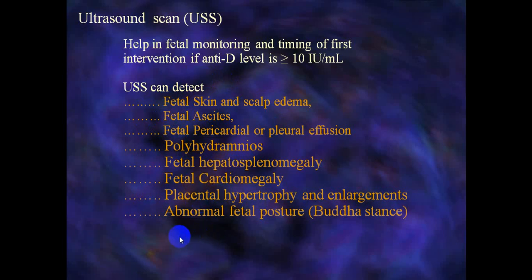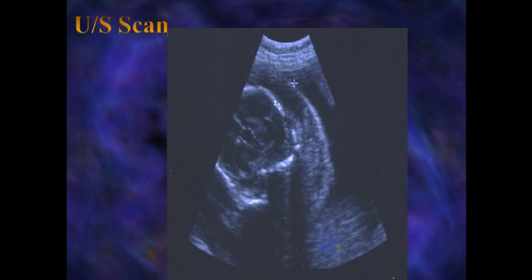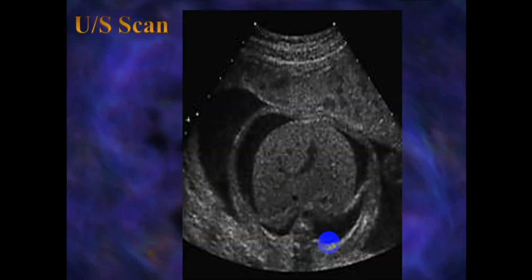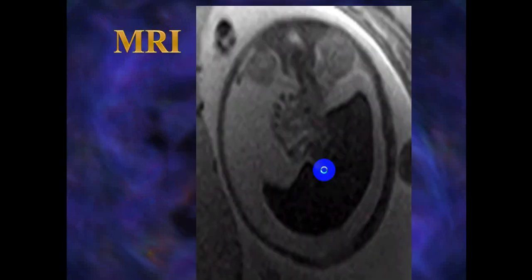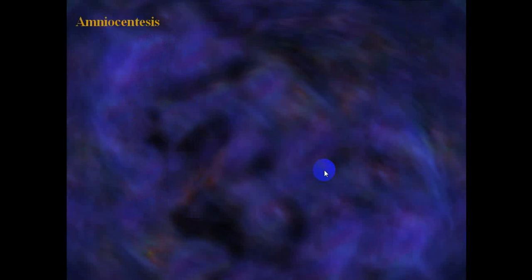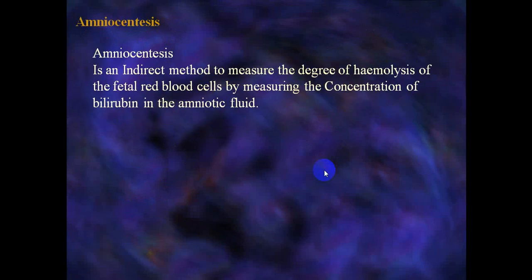Ultrasound can detect: fetal skin and scalp edema, fetal ascites, fetal pericardial effusion, polyhydramnios, fetal hepatosplenomegaly, fetal cardiomegaly, placental hypertrophy and enlargement, abnormal fetal posture, and other signs. This ultrasound finding shows fluid in all parts of the fetal body and abdomen.